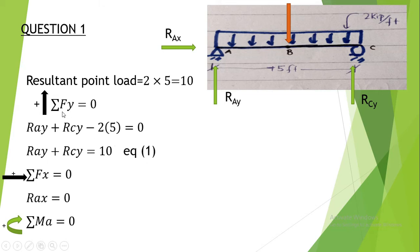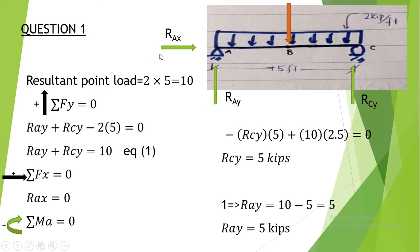Next, applying ΣFx = 0: there is only one reaction acting in the x-direction, so RAx = 0. Then applying ΣMA = 0: RAx and RAY create no moment about point A since they have no perpendicular arm. RCY has a perpendicular arm of 5 feet, and the resultant point load has a perpendicular distance of 2.5 feet from point A.